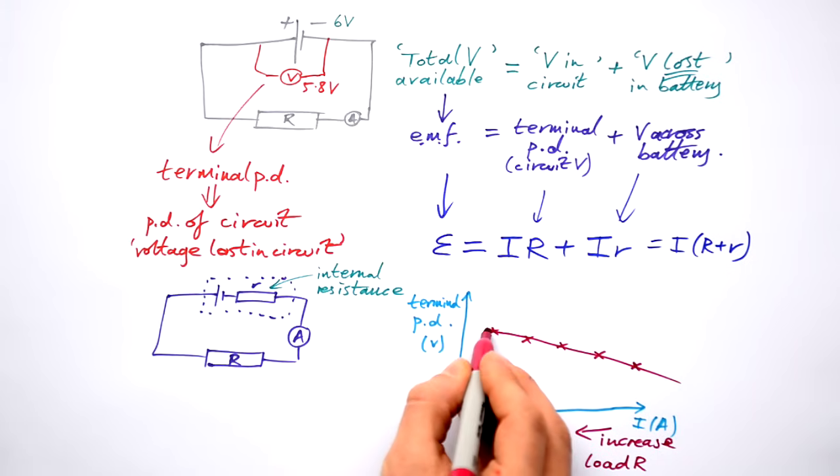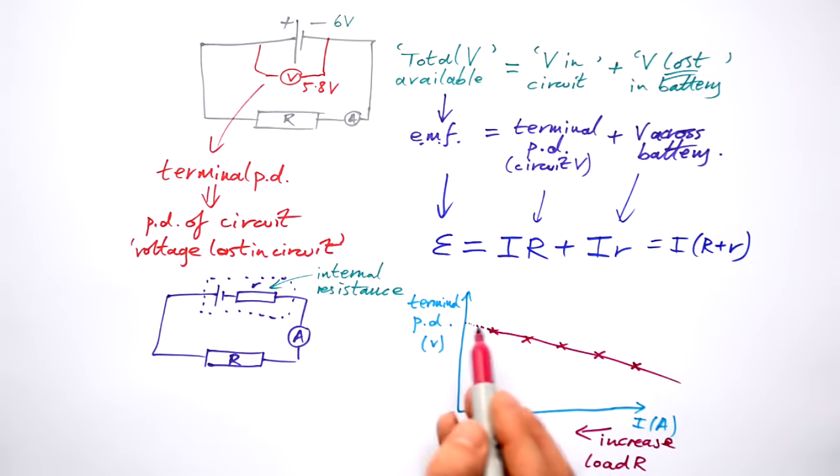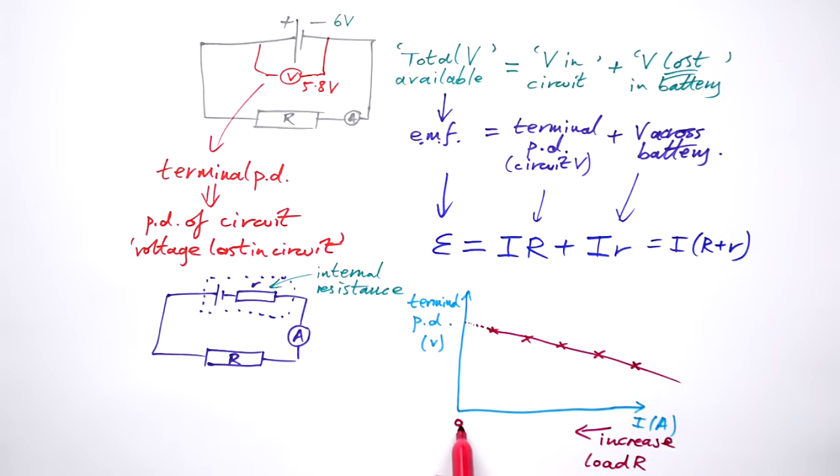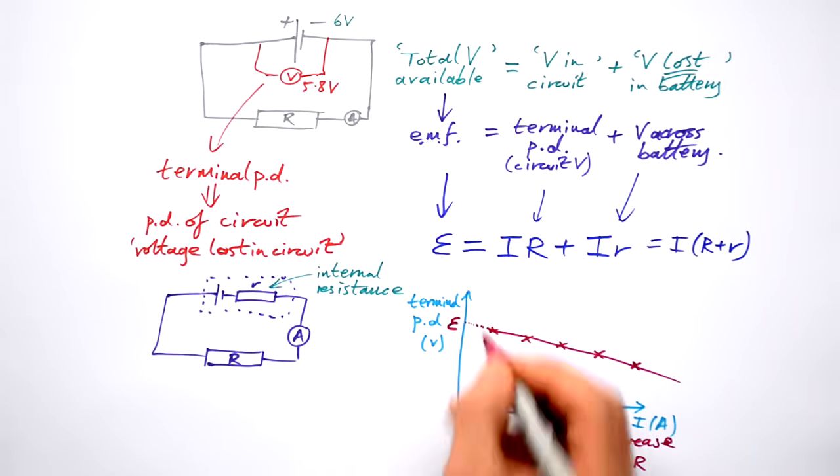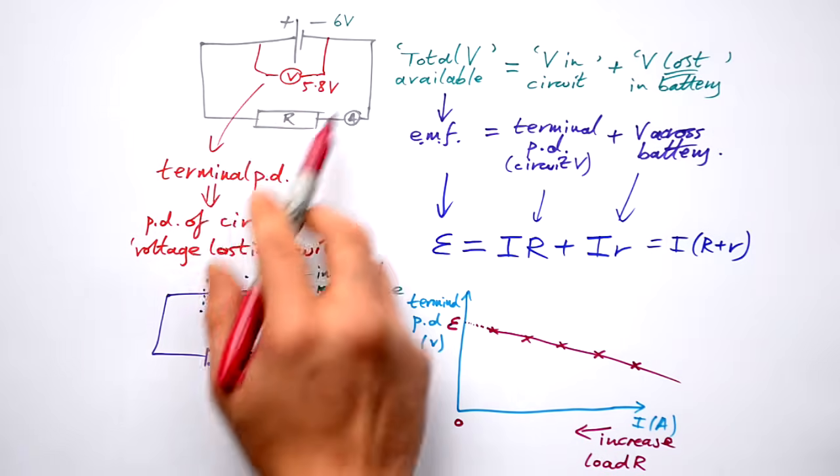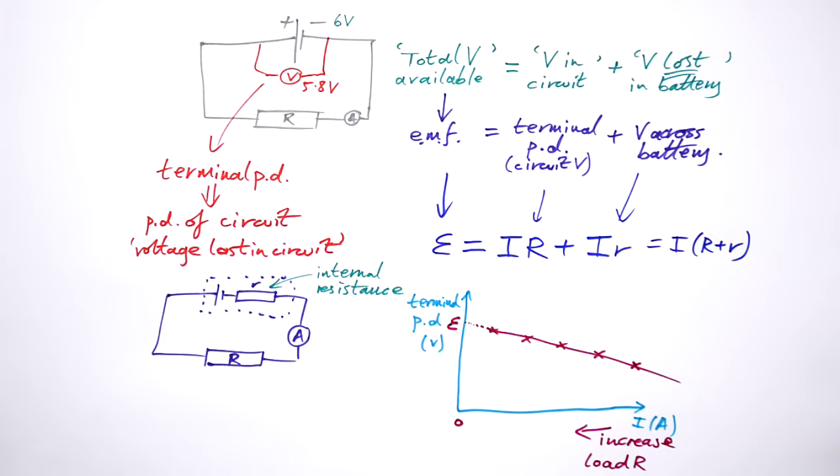Now, if we extrapolate this line, then back to zero current, we can't measure that directly, because of course we can't do anything in a circuit if there's no current flowing. But theoretically, that then is the maximum amount of voltage available from the battery. But we can never, ever, ever have that whole six volts available to the circuit, because that's only possible when the current is zero.